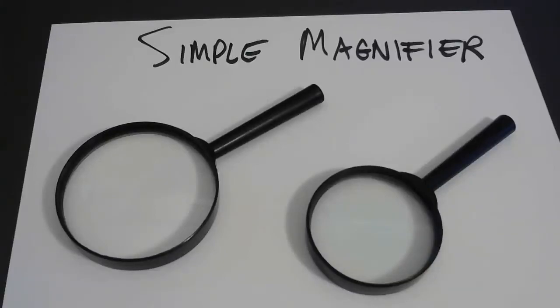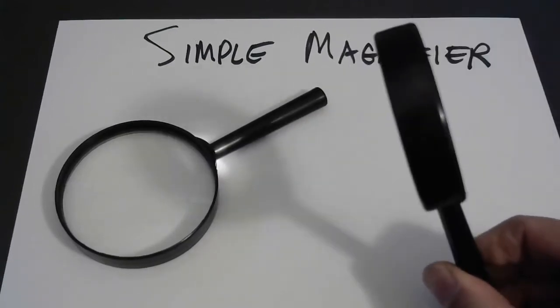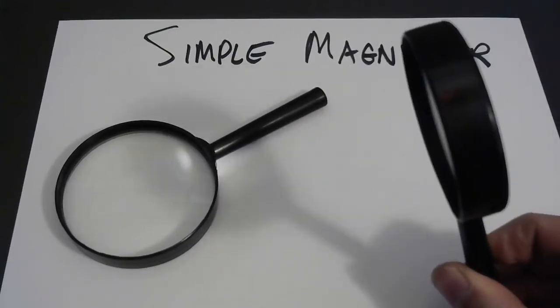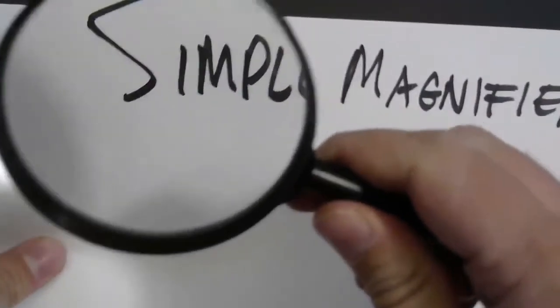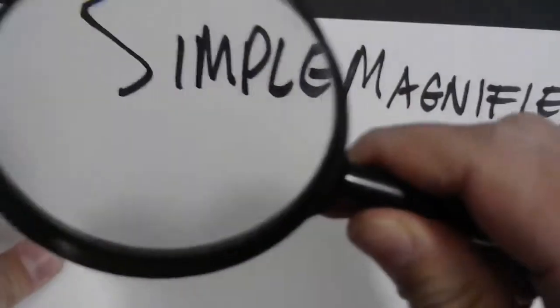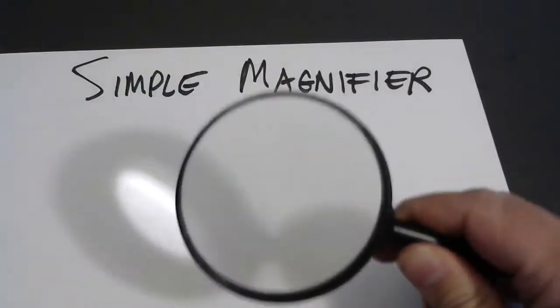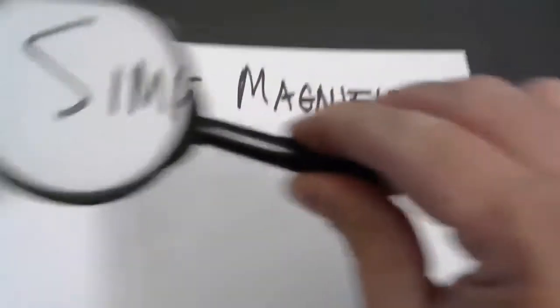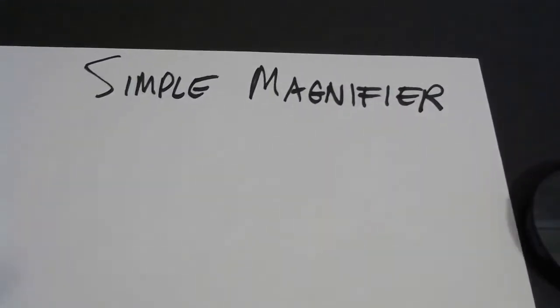Let's take a look at simple magnifiers. You've probably played with one of these — it's very basic, it's just a single converging lens that you can use to make something look bigger. This never gets old. I've got this larger diameter converging lens here, and I've also got this one.